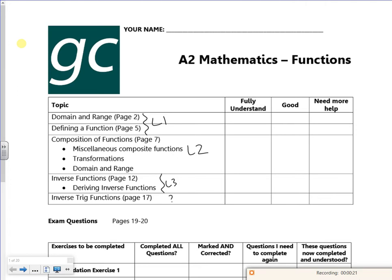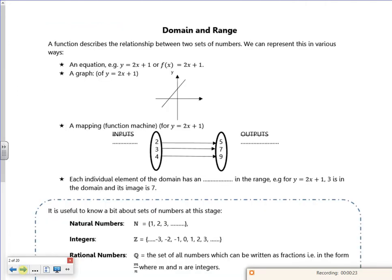It's all about what you put in and what you get out: domain and range. The domain is your x values and the range is your y values, like your ins and your outs. We've got our calculators which makes it easier.